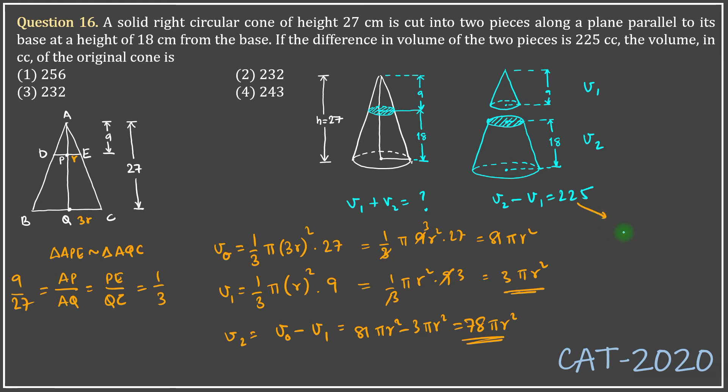I get 78πr² minus 3πr² equals 225, or 75πr² equals 225, or πr² equals 3. What we need to find is the volume of the original cone, that means we need to find v0. V0 in this case we have already found the value as 81πr². Now because πr² is 3, so 81 times 3 = 243 is the answer. Answer option 4 is the correct answer.